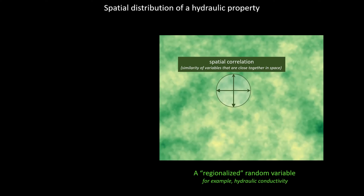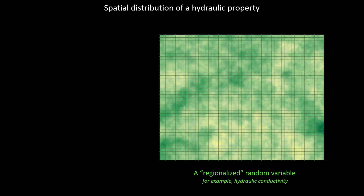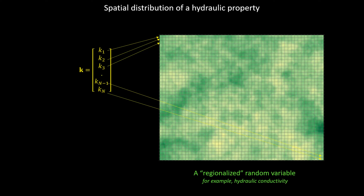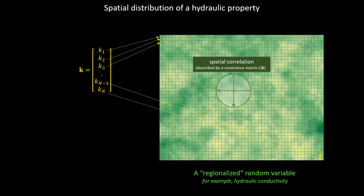Fundamental to random hydraulic property field generation is the idea of spatial correlation. We subdivide this domain using a grid — this can be a model grid — and our task is to assign a value of k (hydraulic conductivity) to each cell: k1, k2, right up to kN, where N is the number of cells. So my task is to create a giant random vector k with a random realization of hydraulic conductivity or a hydraulic property.